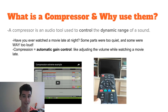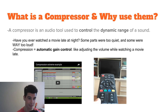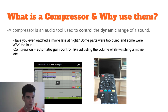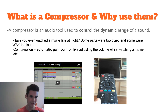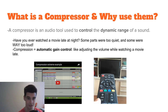First of all, what is a compressor and why should you use them? A compressor is an audio tool to control the dynamic range of a sound. Have you ever watched a movie late at night? Some parts were too quiet and some were way too loud so you were controlling the volume the whole time. Well, compression is a little bit like that — it's automatic gain control, but you have to tell it what to do. Let's listen to a quick extreme example of compression.